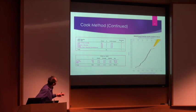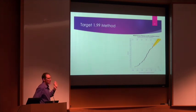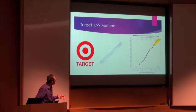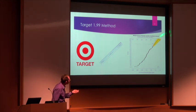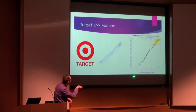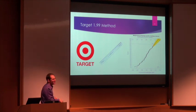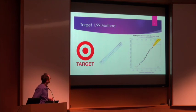The last method was the Target 1.99 method. I went to Target, got a ruler, and told my boss it was going to be somewhere right there — just linear extrapolation. After spending months on the other methods, I grabbed a ruler and said I think it'll be around that date. He said my budget was cut in half. So that's pretty much it.